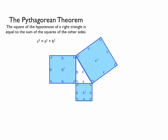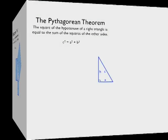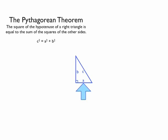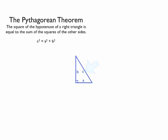Let's look at why c squared equals a squared plus b squared from a visual perspective. Let's start with a right triangle with the shortest side of the triangle having length a, the second shortest side having length b, and the third side, the hypotenuse, having length c. Remember, the hypotenuse, the longest side of a right triangle, is always directly across from the right angle.